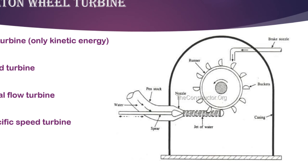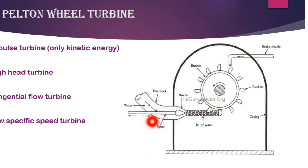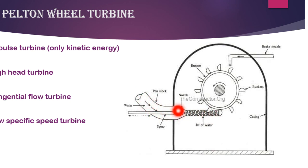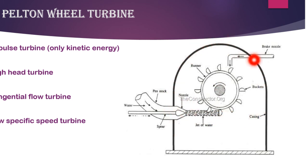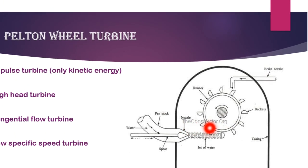In the Pelton wheel turbine, water comes through the penstock. There is a spear valve — you can see it in the 3D image. If we adjust the spear, we can control and resist the water flow. The runner part has buckets. There is also a shaft.